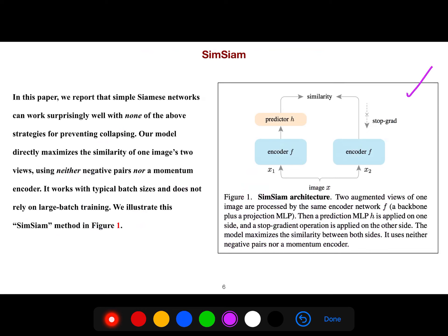This architecture is called SimSiam. As I said, there is another paper that empirically shows that even SimSiam collapses if the model is too simple, so we need to add model complexity. We report that SimSiam networks can work surprisingly well with none of the above strategies for preventing collapsing. The model directly maximizes the similarity of one image's two views using neither negative pairs nor a momentum encoder.